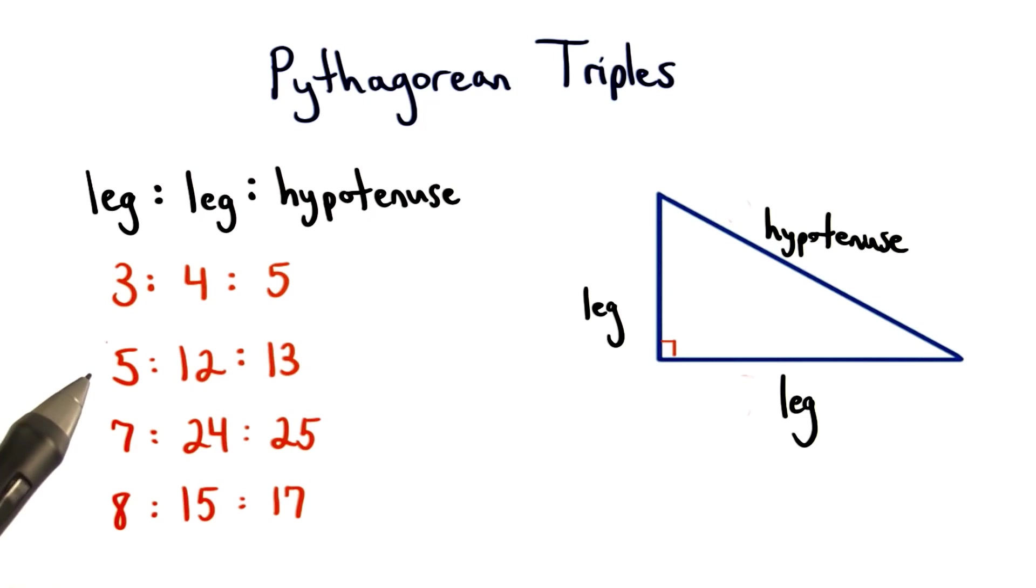There are a couple of Pythagorean triples that appear often enough that it's helpful to know these. If you're able to quickly recognize these, then you can easily find missing side lengths.